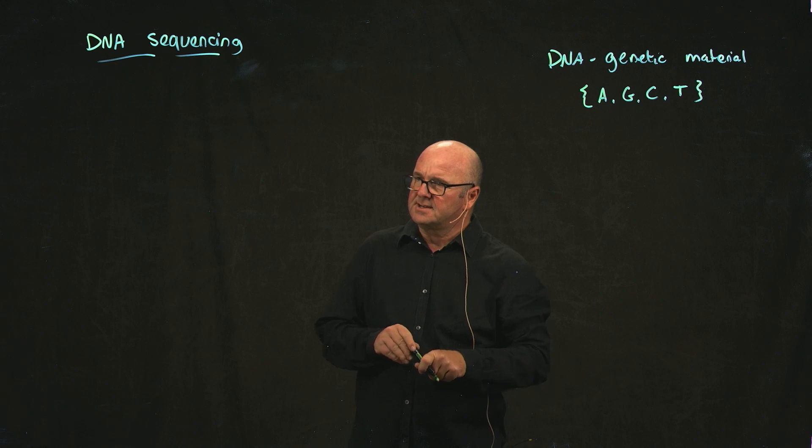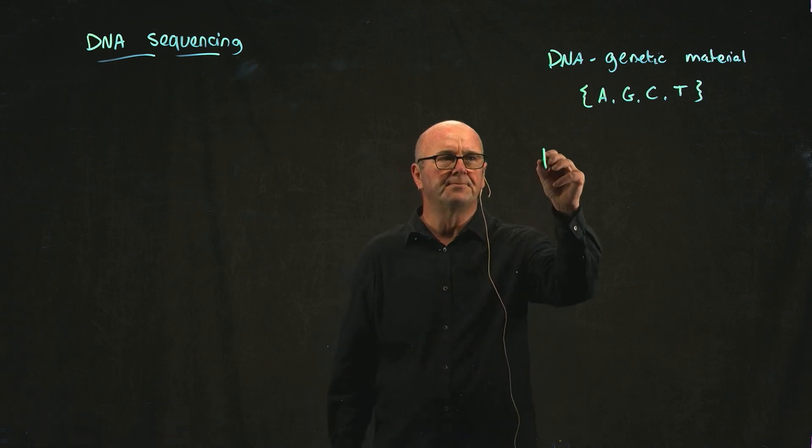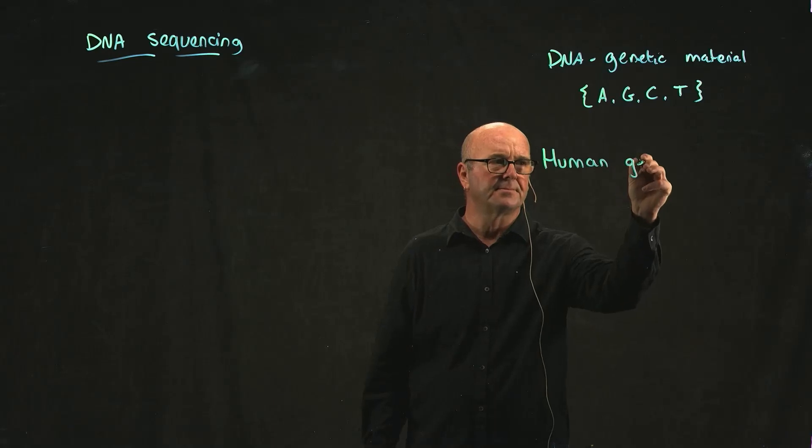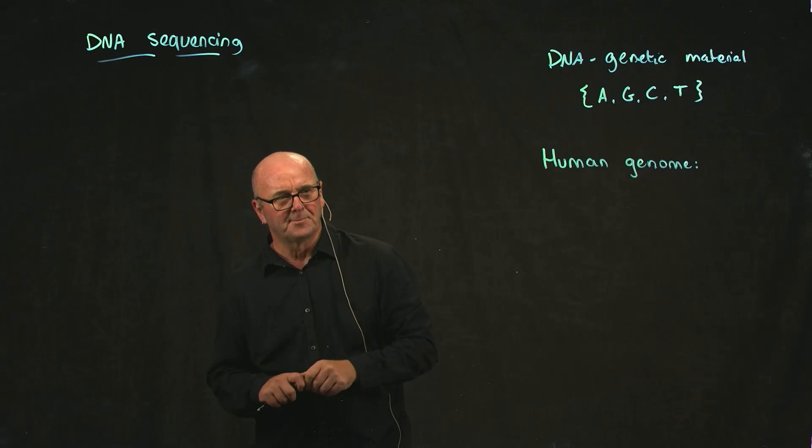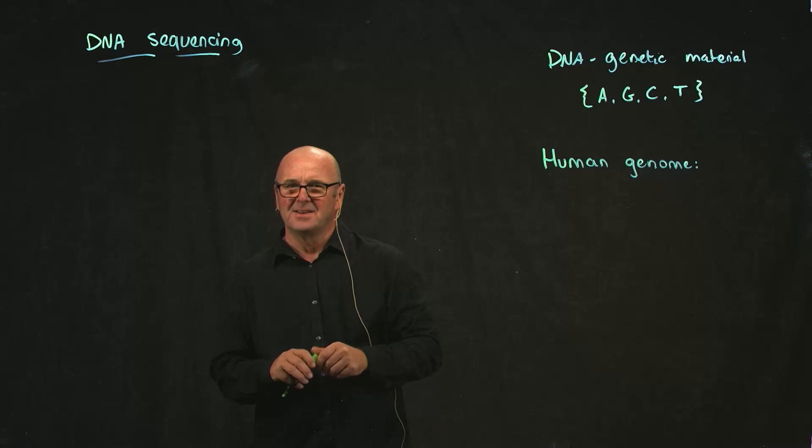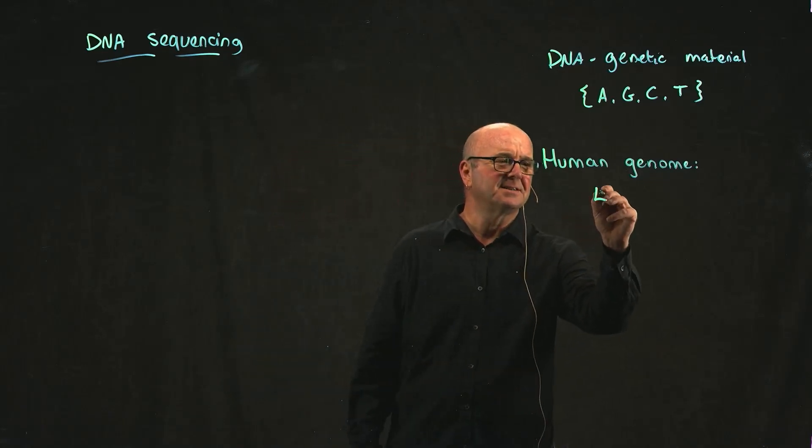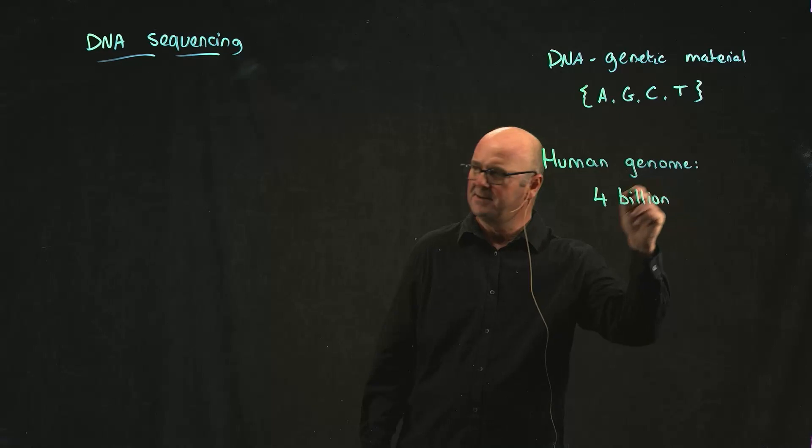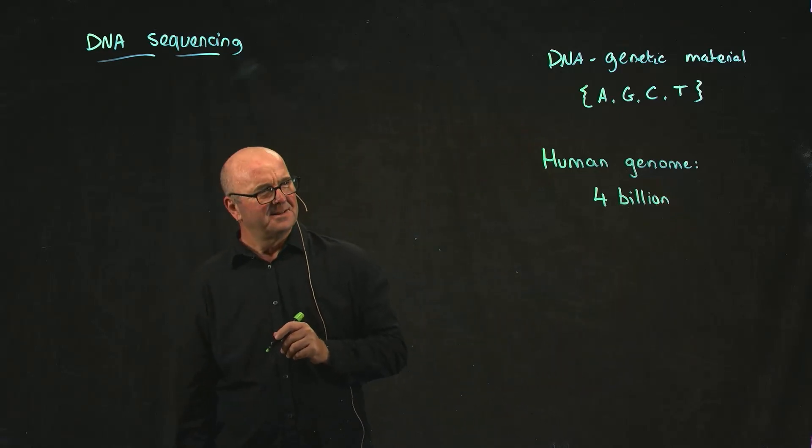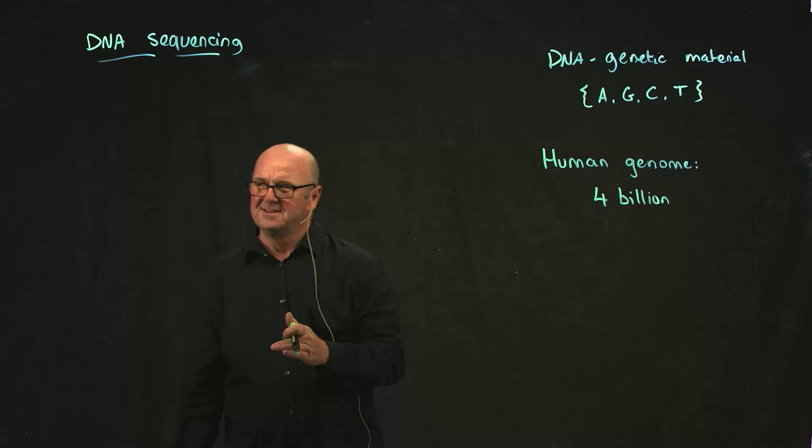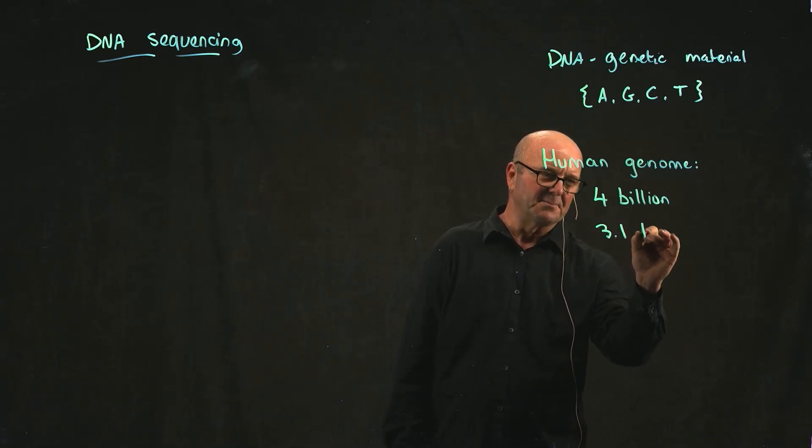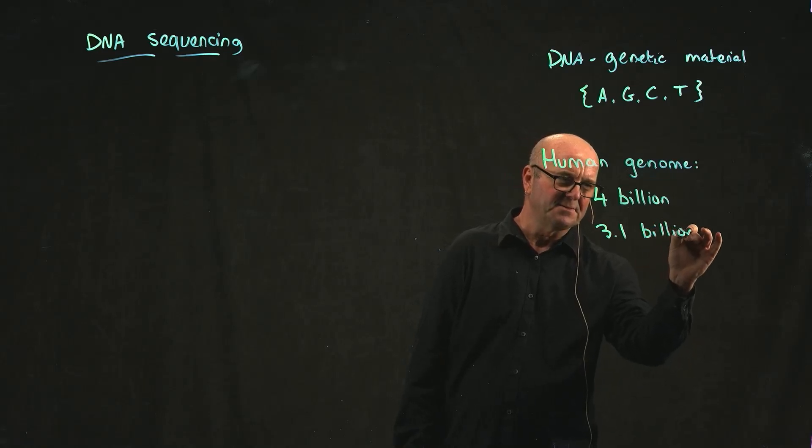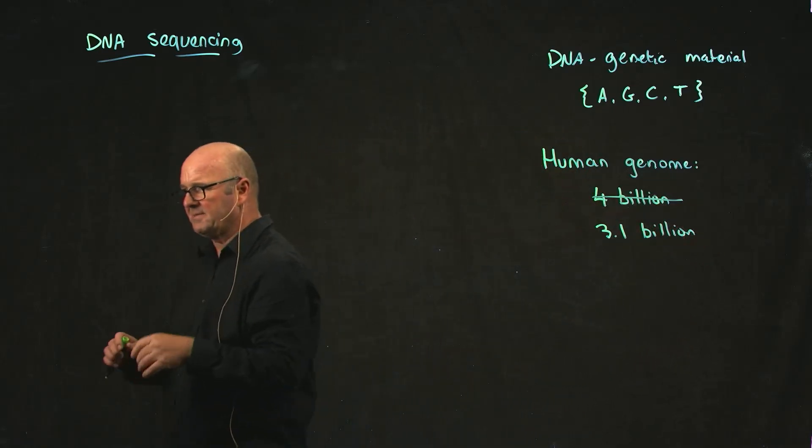How big is the human genome? Anyone have an idea? Four billion base pairs. Any other advance on four billion? It's close, but it's not four billion. It's actually 3.1 billion. So four billion is pretty close. Yours may be four billion - you may have a few extra.